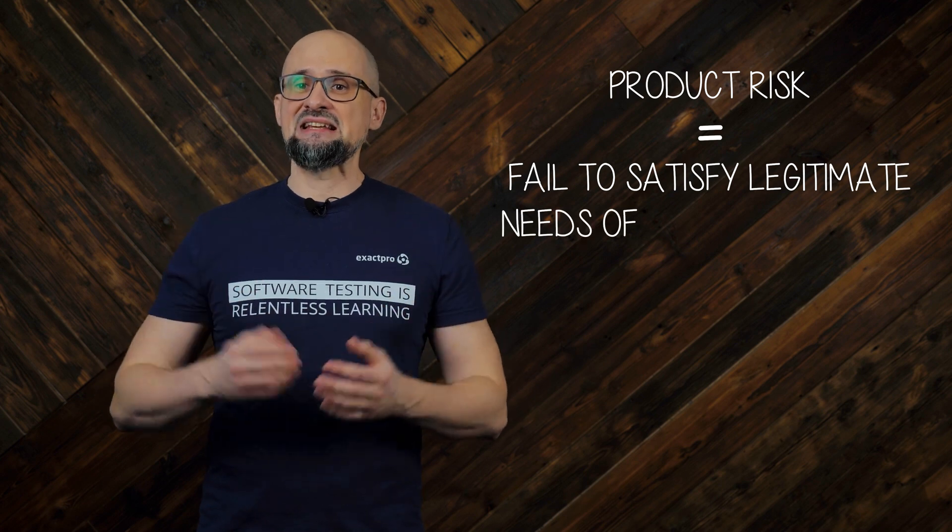One of the most essential activities of the test team is to mitigate risks. Risk is a possibility of a future event which has negative consequences. At this stage we classify them into product and project risks. A product risk involves the possibility that a work product — a specification, component, system, or test — may fail to satisfy the legitimate needs of its stakeholders. When product risks are associated with specific quality characteristics such as functional stability, reliability, performance efficiency, usability, security, compatibility, maintainability, and portability, they can also be called quality risks.